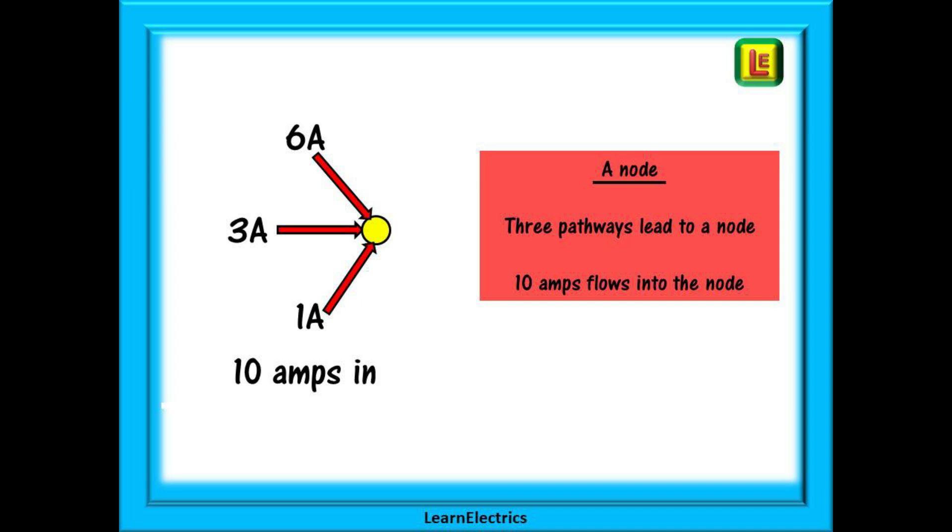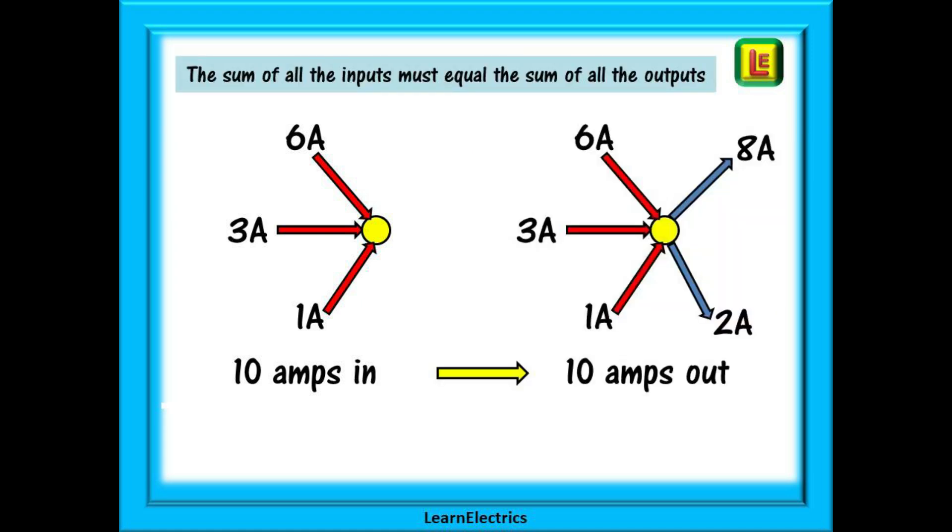In this example we have three current inputs—a 6 amp, a 3 amp, and a 1 amp—making 10 amps in total. Flowing out we have two pathways, an 8 amp and a 2 amp. This is 10 amps output in total, and this satisfies Kirchhoff's current law. 10 amps flows in and 10 amps flows out.